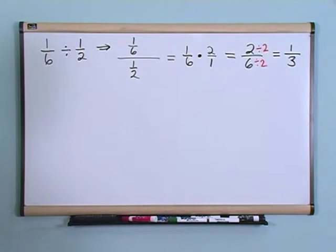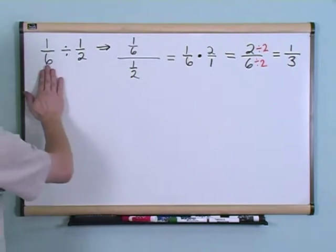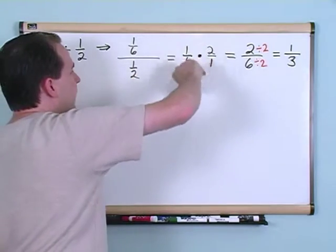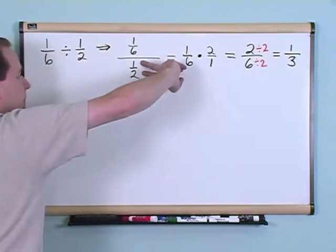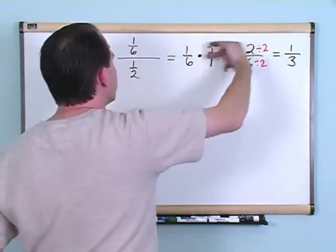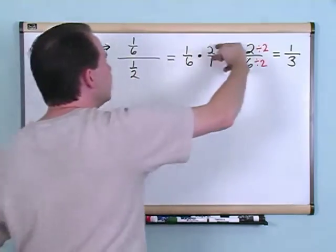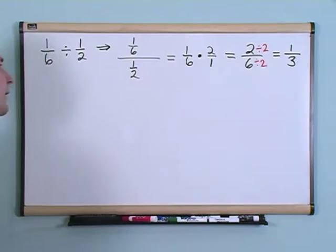The only thing that you need to know here is when you're dividing, you take the top number and then you change this division into a multiplication and then you take the bottom fraction and you flip it over, which is what we did here. One over two became two over one and then you can multiply them.